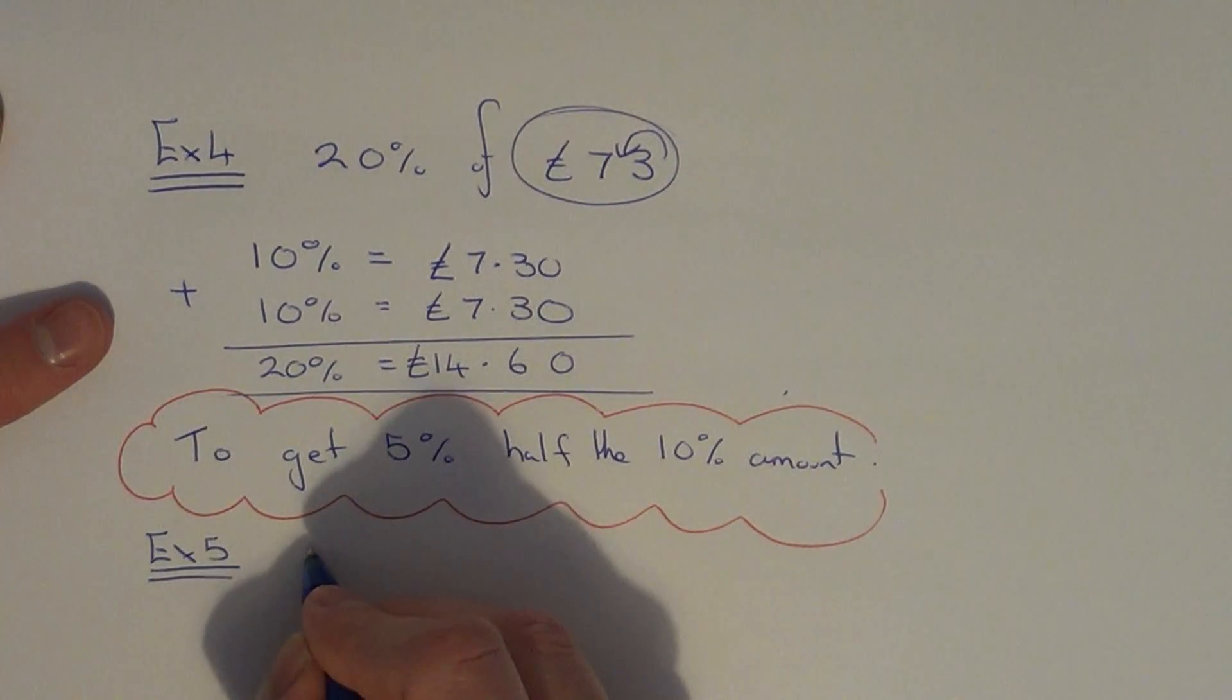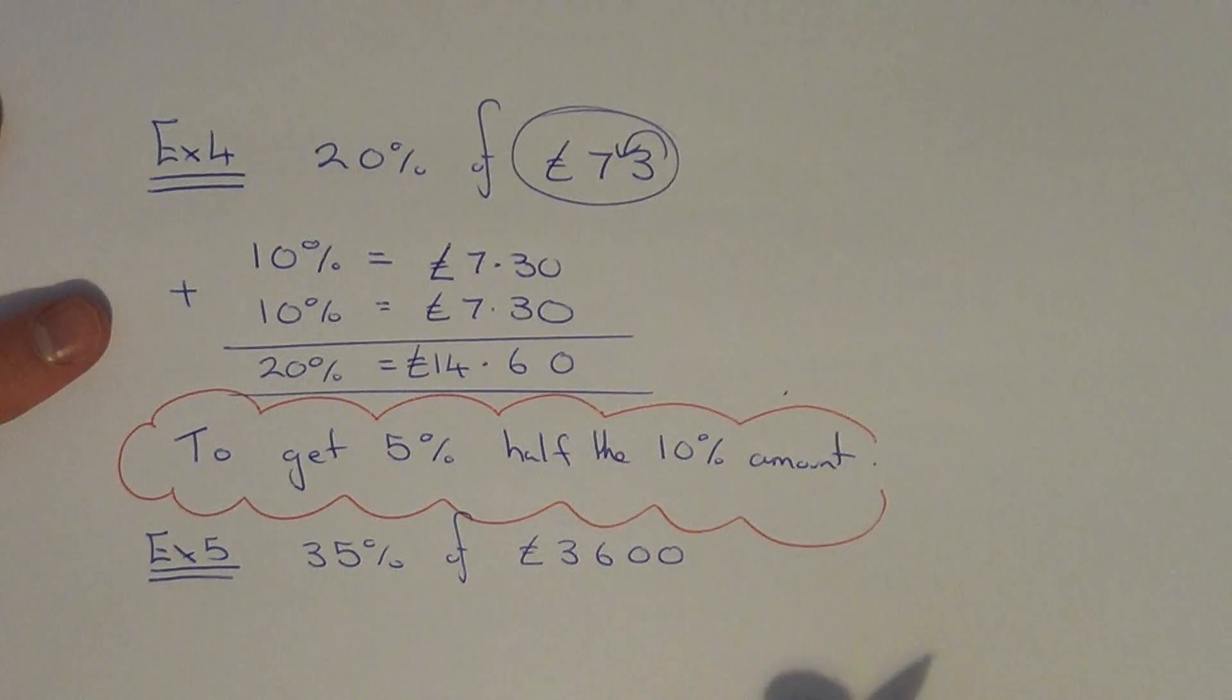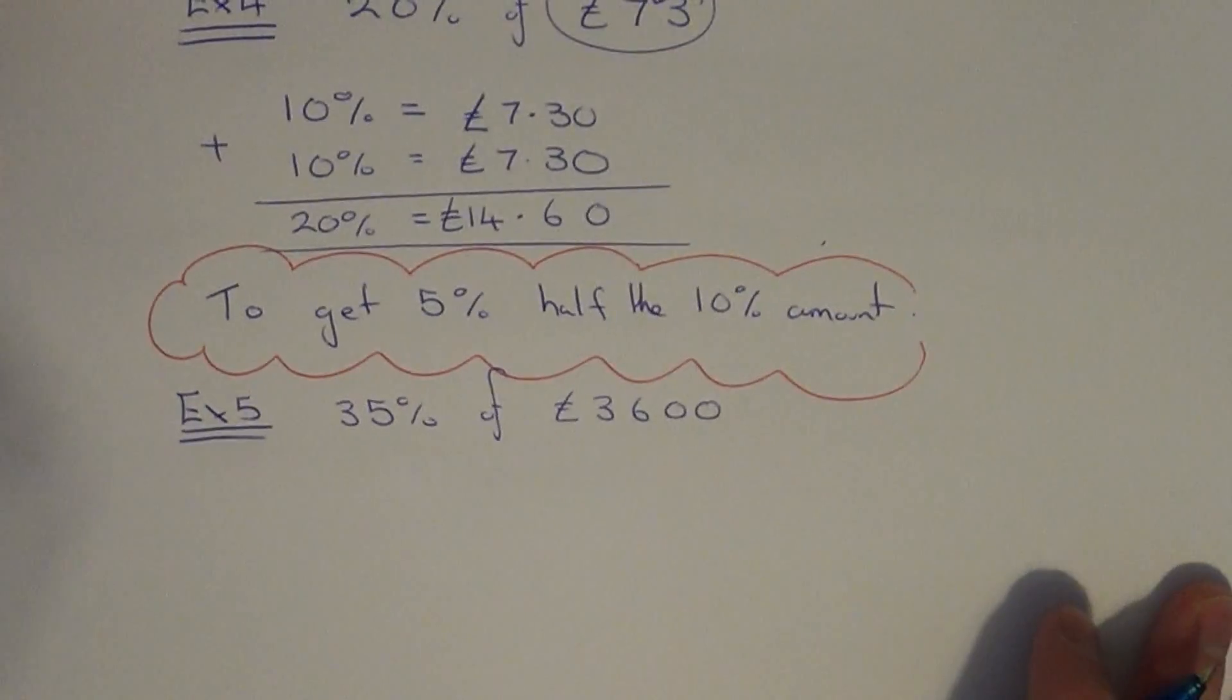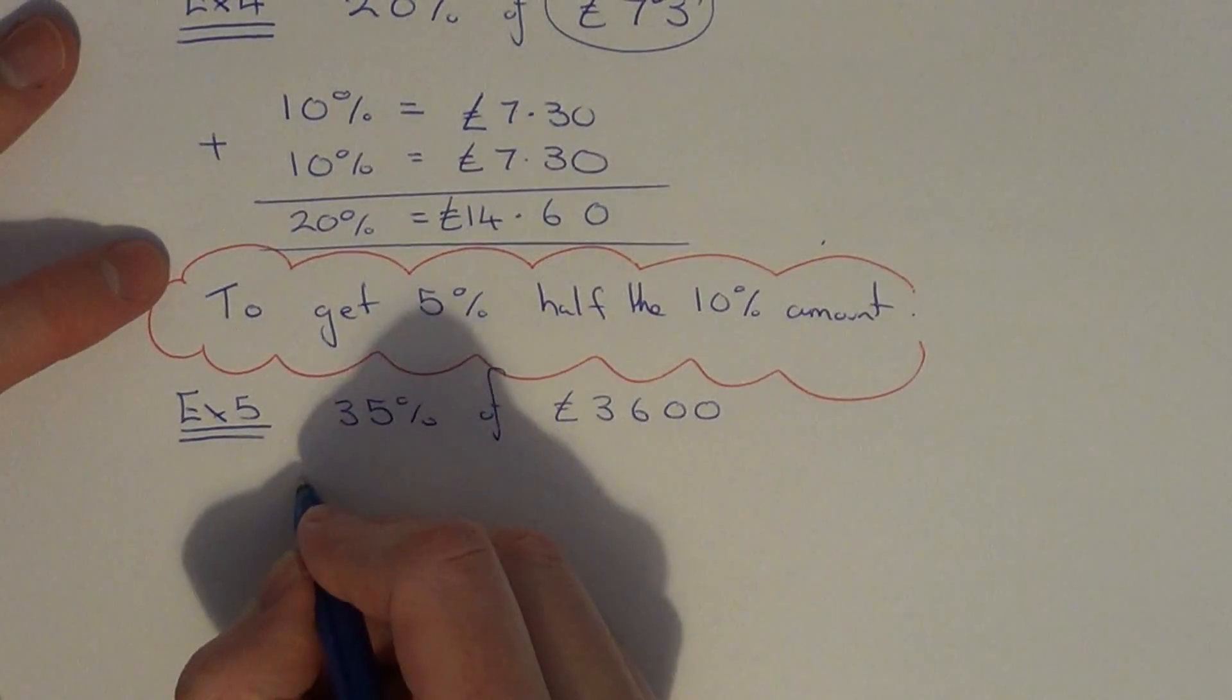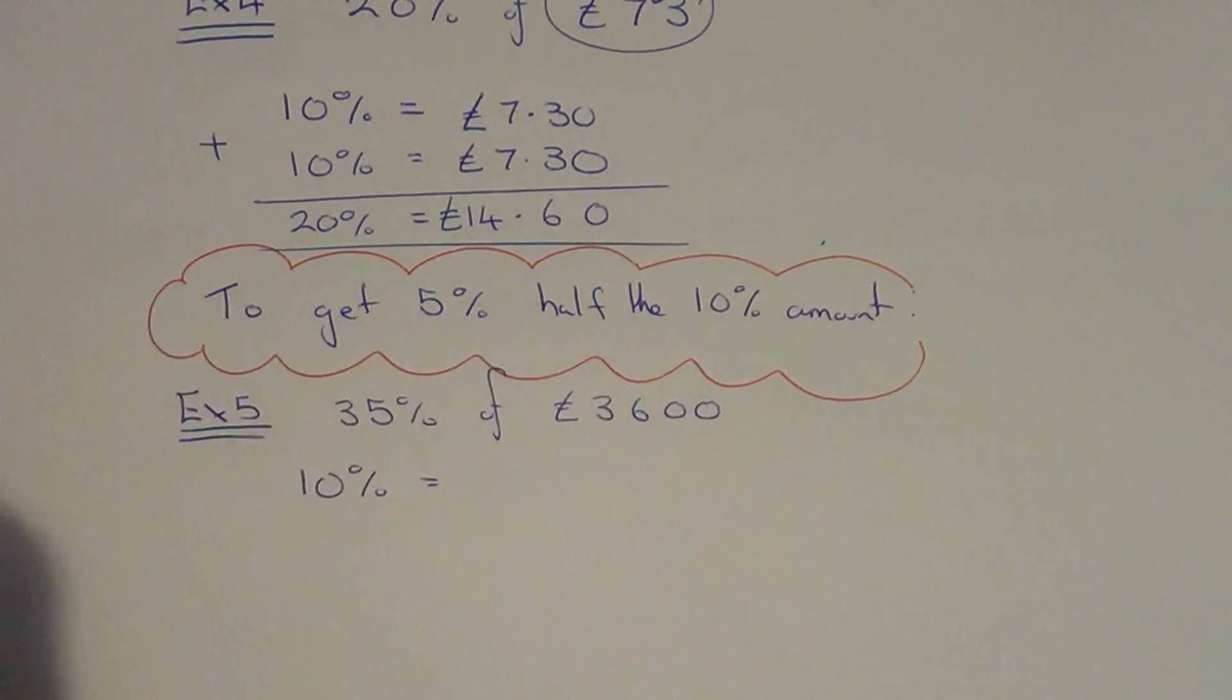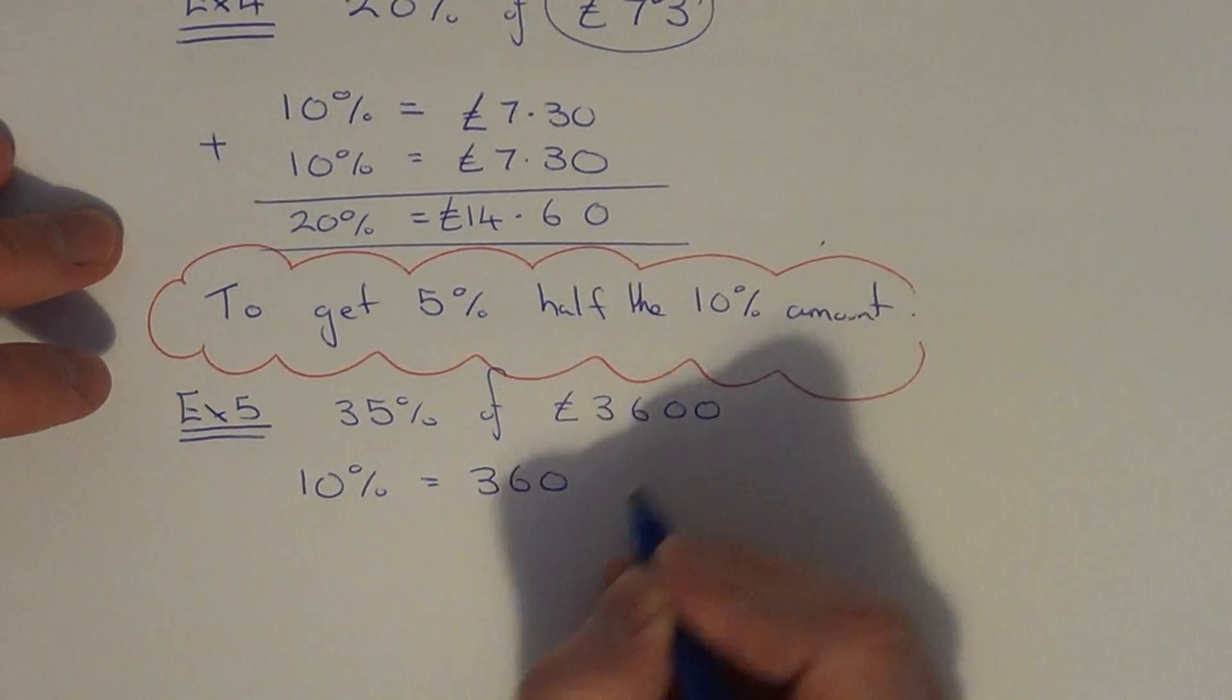Example five. We're going to work out 35% of £3,600. So again all we need to do is start off by doing 10%. So 10% of £3,600 is 360. Again just take your zero off.